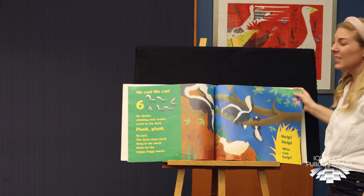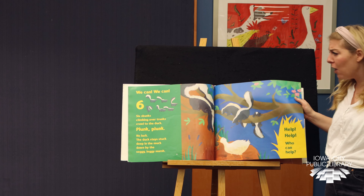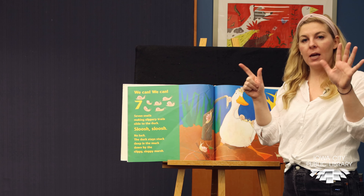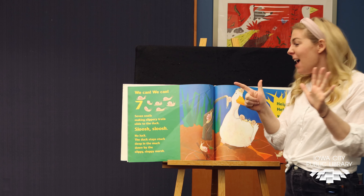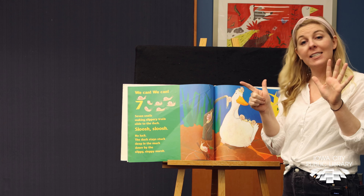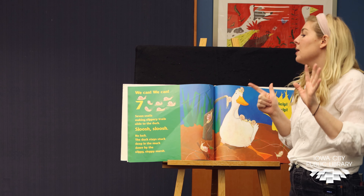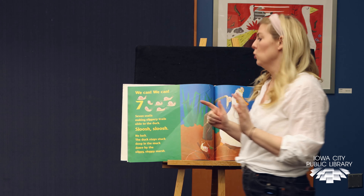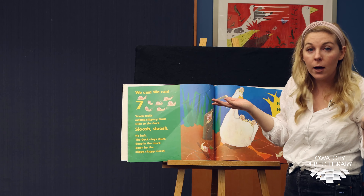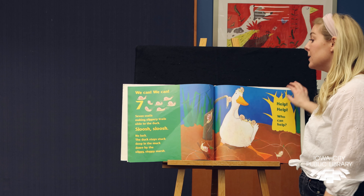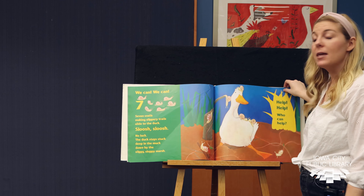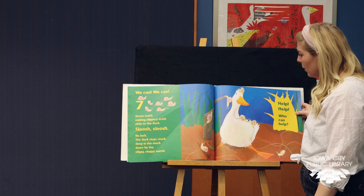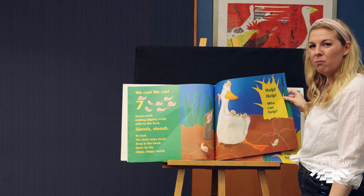And the duck says, help, help. Who can help? We can, we can. Can you show me how many we have now? We have seven. And what are they? Snails. Seven snails, making slippery trails, slide to the duck — sloosh, sloosh. No luck. The duck stays stuck deep in the muck, down by the slippy, sloppy marsh. They're so cute though, but not very helpful. They're tiny.